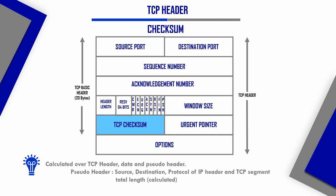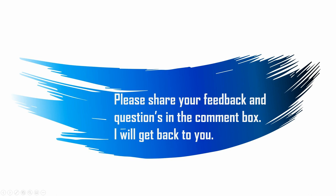To summarize: source port and destination port are 16 bits each; sequence number and acknowledgement number are 32 bits; header length is 4 bits; flags are 1 bit each; window size is 16 bits; TCP checksum is 16 bits; urgent pointer is 16 bits — making the basic TCP header 20 bytes fixed. Then we have the options field. Thank you for watching — please share your feedback and questions in the comments. If you like it, please subscribe and share the video.